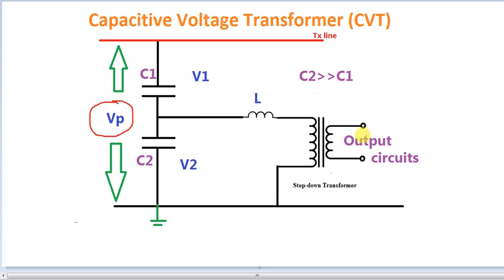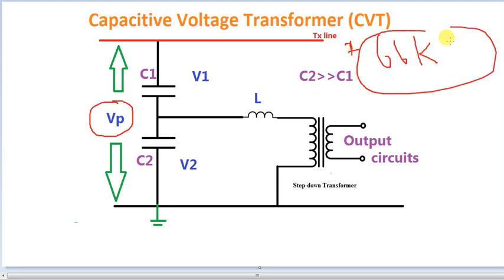What we use here is why we use a potential transformer. We will step down a lot of the scheme. For example, we use the same level — this is about 62.5 kV, 66 kV. That is how the voltage is rising. We will change to an instrument transformer.